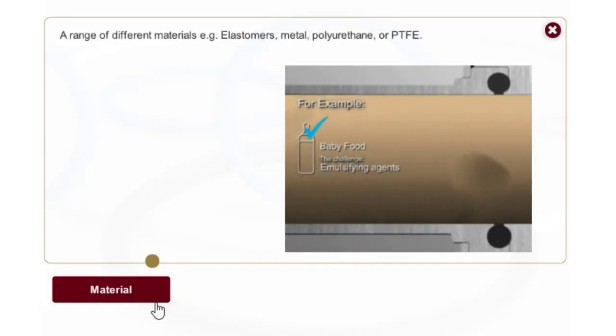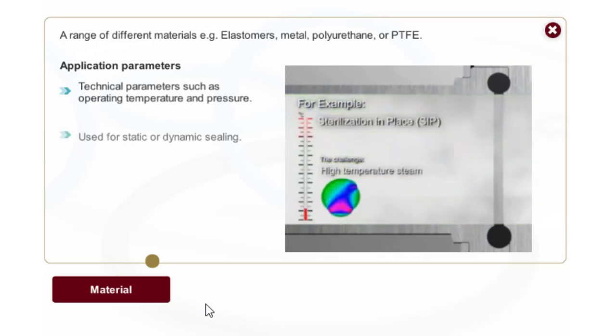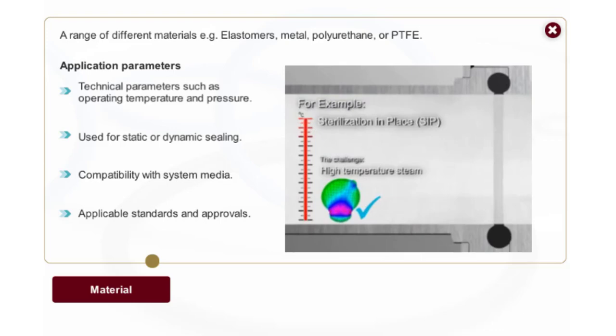The choice of material depends on its media compatibility, the application and the technical parameters, such as operating temperature and pressure, or whether the O-ring will be used for static or dynamic sealing. Other important issues to be considered are required standards and approvals.